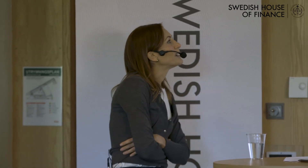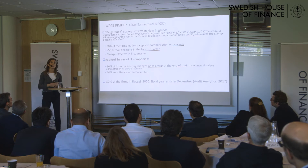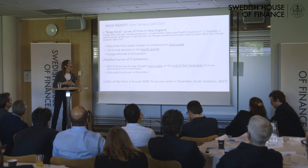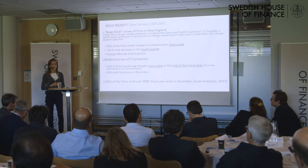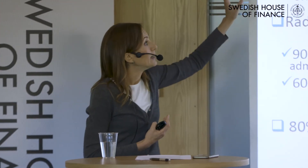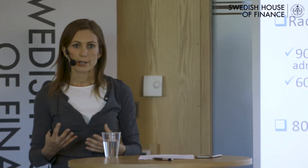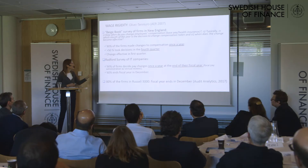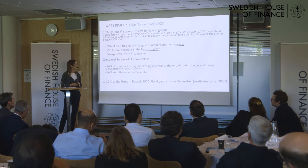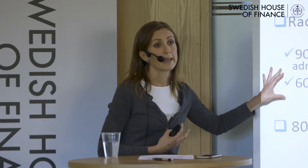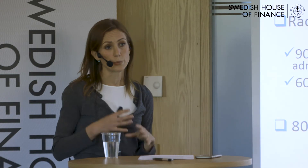Back in 2003, we convinced the Boston Fed to add new questions to the Beige Book survey of New England firms. From those questions we learned that 90% of firms made changes to compensation once a year, more than 50% of the firms took the decision in the fourth quarter of the calendar year, and typically the changes became effective at the turn of the year. Completely independently, from the Radford survey of IT companies covering the whole US, we also learned that 90% of firms decided on pay changes at the end of the fiscal year, and for 60% of firms the fiscal year ended in December, with the remaining 40% pretty evenly distributed.